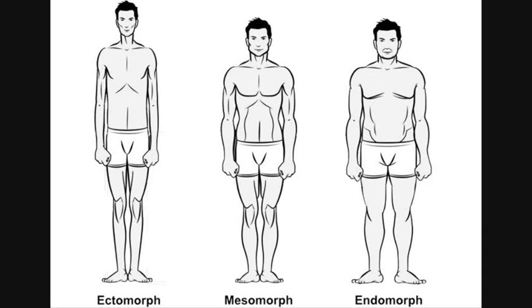These three body types are at their extremes. Most people are crossed between the three different body types. So for example, you could be a mesoecto or a mesoendo, etc.